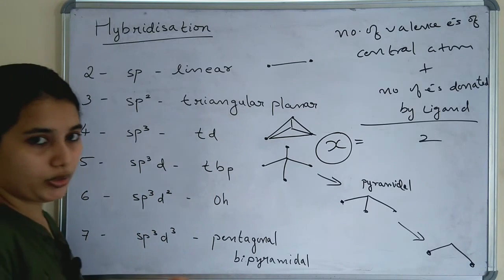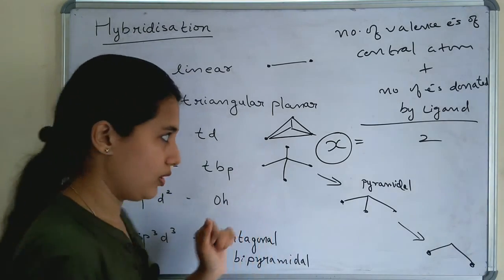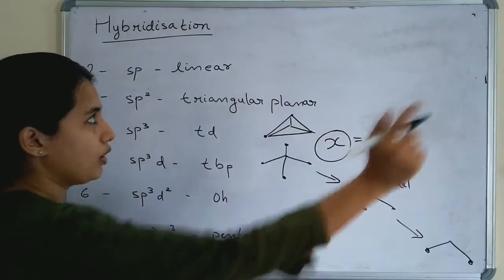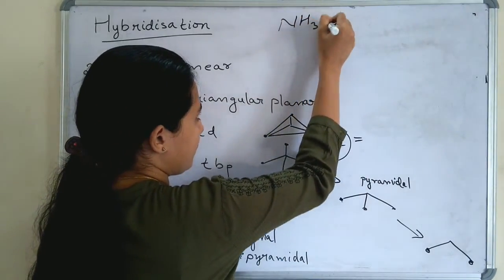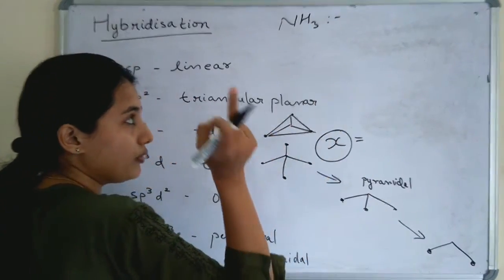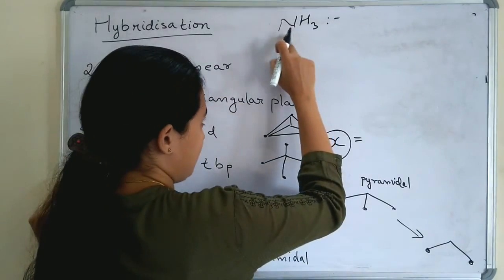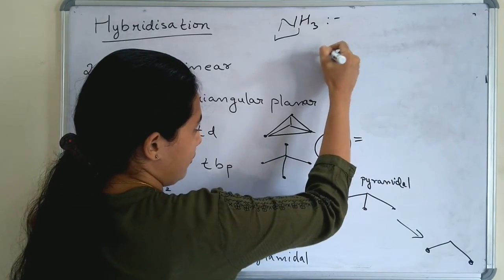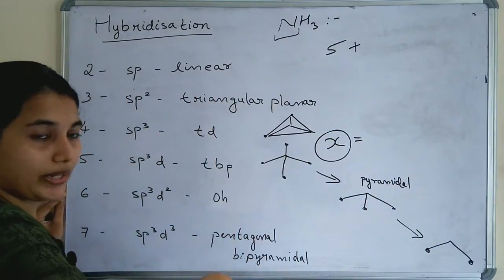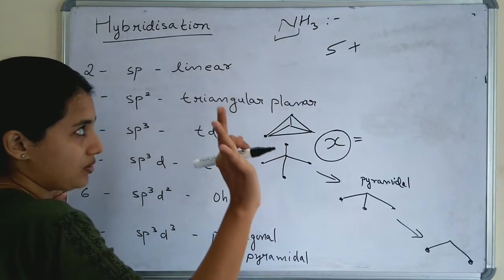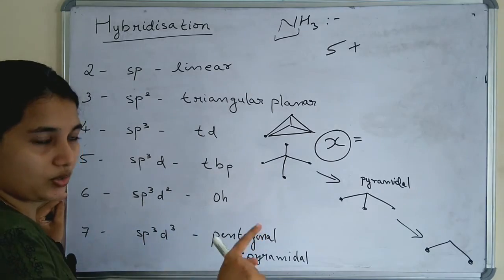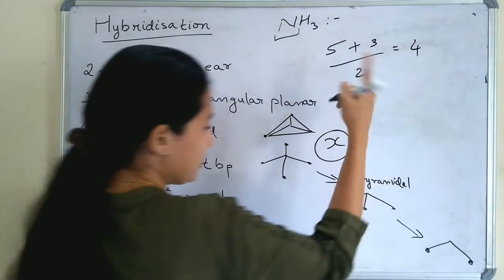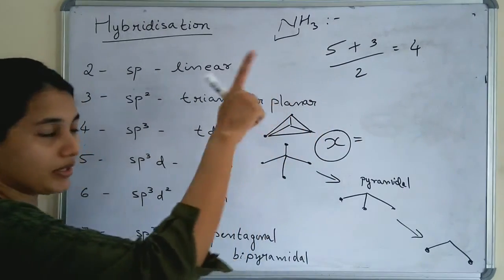For example, let's calculate the hybridization and shape of ammonia, NH3. The central atom is nitrogen, which has 5 valence electrons. Plus the number of electrons donated by the ligand, hydrogen. There are 3 hydrogens, and one hydrogen donates one electron, so 1 × 3 = 3. Dividing by 2: (5 + 3) / 2 = 8 / 2 = 4. So x = 4.